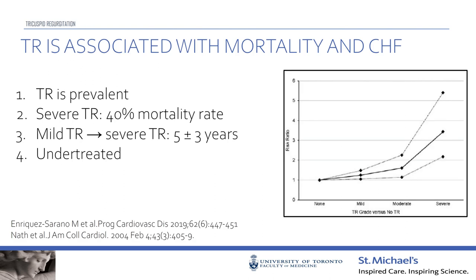Awareness of tricuspid valve as a disease impacting patients really started about eight years ago. We knew patients had TR but didn't know what to do or understand its significance until recently. TR is quite prevalent — patients with mitral valve stenosis, mitral regurgitation, aortic stenosis, and long-standing atrial fibrillation with dilated atria all commonly have tricuspid regurgitation. We've found this disease is independently associated with mortality regardless of other conditions.